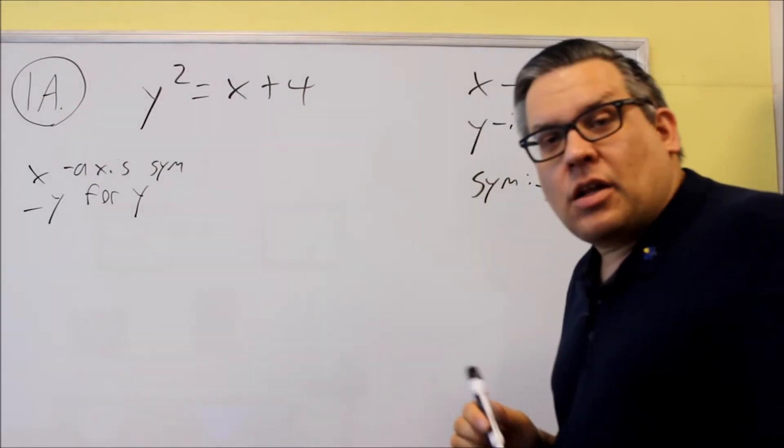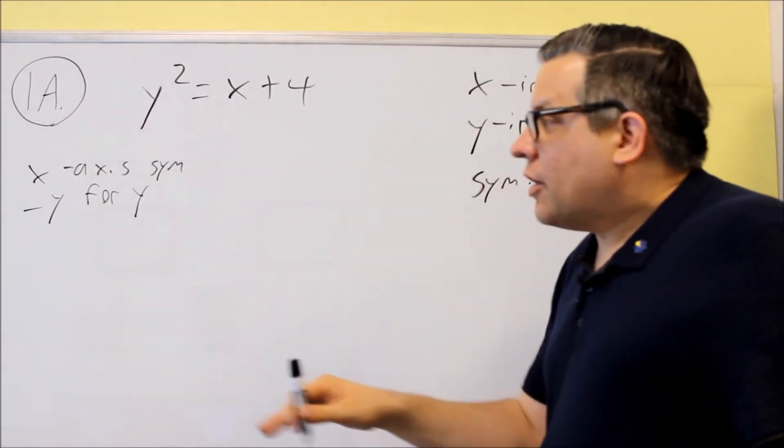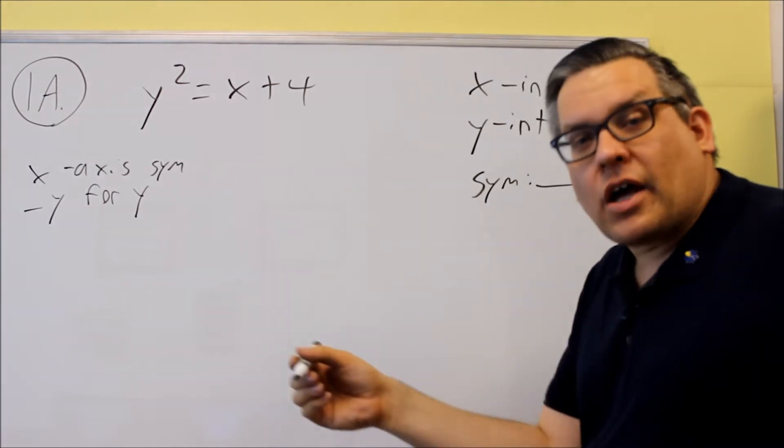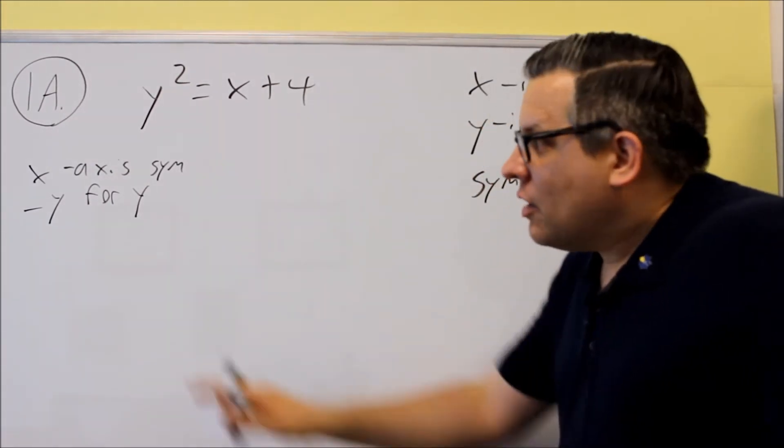Otherwise if you don't get that, that means it does not have that kind of symmetry. So I want you to label somewhere around there. You don't have to necessarily put the negative y for y, but somewhere at least just put x-axis, y-axis and origin so that way I can follow your work that you're showing here.